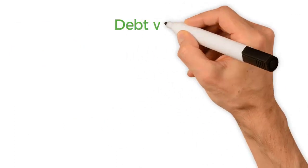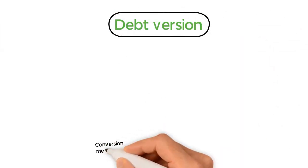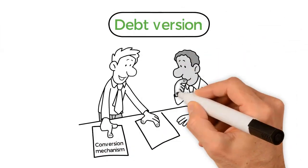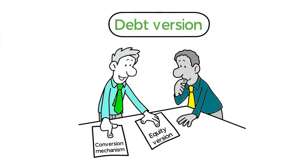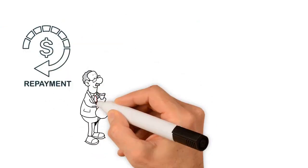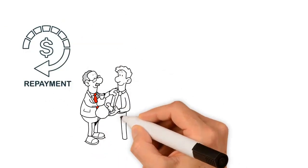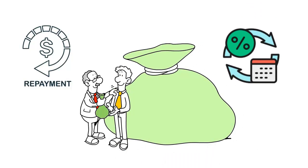The second is the debt version, where the conversion mechanism is the same as the equity version, but if the KISS is not converted, investors are allowed to seek a repayment of the KISS investment amount and its accrued interest on any date after the maturity date.